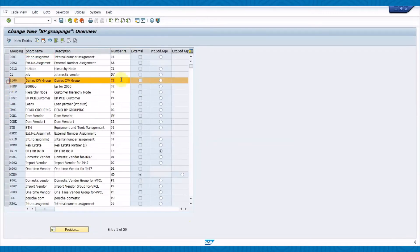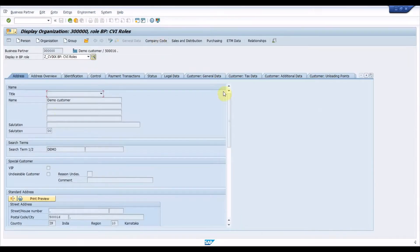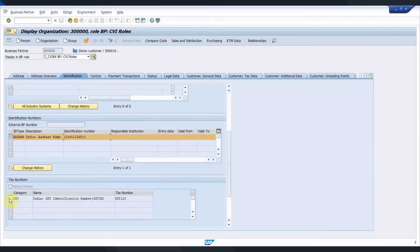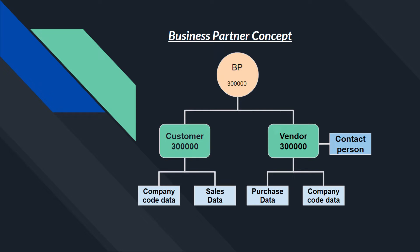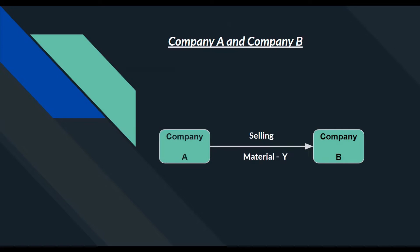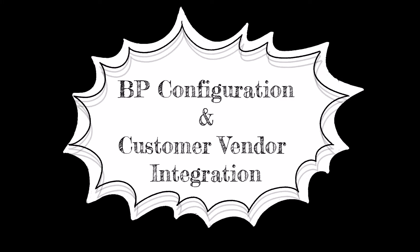Hello guys, welcome back to my YouTube channel. Today in this video, let us learn Customer Vendor Integration, which is a leading object in S4HANA. SAP has introduced business partner as a leading object in S4HANA so as to bring a central person concept. Business partners may have different roles in an organization — for example, Company A is purchasing material X from Company B and also selling material Y to Company B, so Company A has two roles: customer and vendor. We can have a central business partner in the SAP system and extend the partner's roles as per business requirements. To build this functionality we need to do two sets of BP configuration.